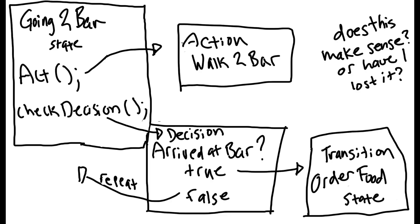The way I have the movement set up: the first state is the going-to-bar state. The action of the state is to walk to the bar, the decision checks whether you've made it to the bar, and then the transition will go to the ordering state once that decision is true.